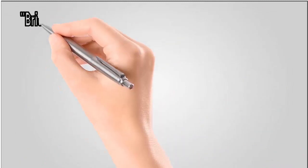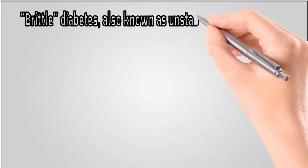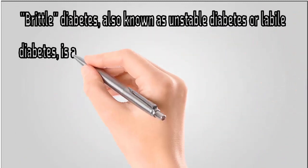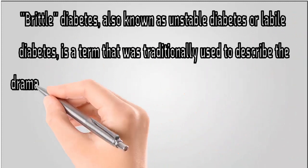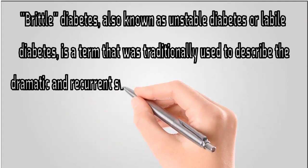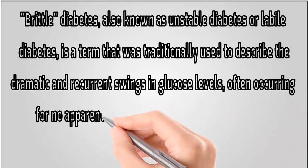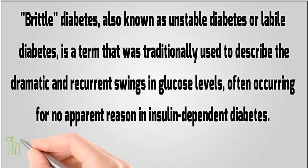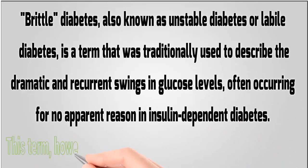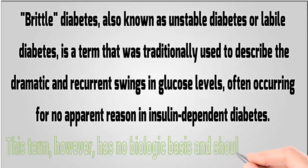Brittle diabetes, also known as unstable diabetes or labile diabetes, is a term that was traditionally used to describe the dramatic and recurrent swings in glucose levels, often occurring for no apparent reason in insulin-dependent diabetes. This term, however, has no biologic basis and should not be used.